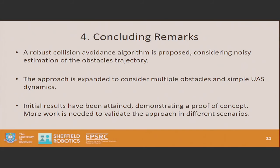The approach we've taken uses uncertainty in the trajectory to define a robust way for handling uncertainty in the sense-and-avoid measurements and obstacle trajectory, in a way that can act as a bolt-on for other flight controllers and control mechanisms. We expanded the mechanism to work in higher dimensions, and it proves that we can use dimensional methods for calculating intersections and unions between the avoidance regions and multiple objects. We've demonstrated that avoidance is possible, however there's much more that needs to be considered in terms of validation and confirming robustness.